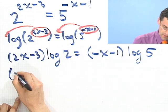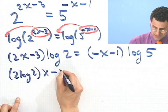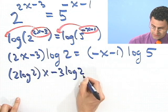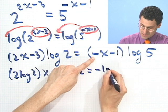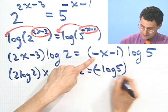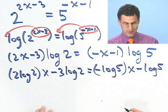let's see, 2 log 2 times x minus 3 log 2 equals, let's see, here I'd see a minus log 5x, and then here I'd see a minus log 5.